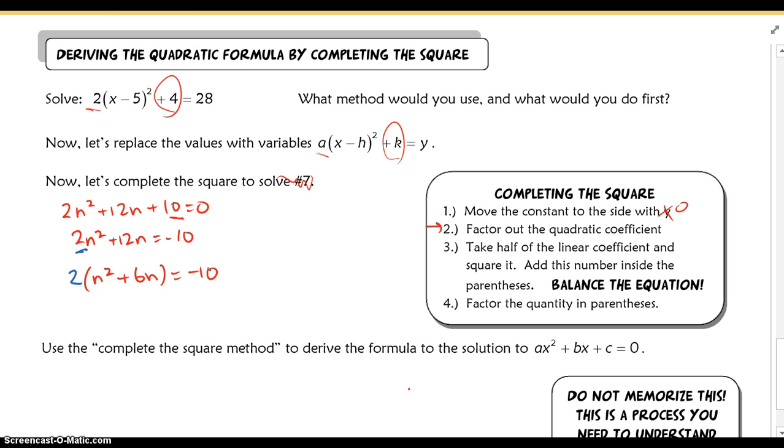Now, when I look at this, my third step here says to take half of the linear coefficient and square it. Okay, so that means I'm going to look at the linear coefficient, which is this term here, the 6. I take half of that, so half of 6 is 3, and I'm going to square it. I then add this number inside the parentheses.